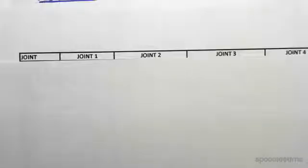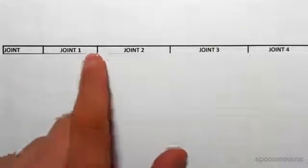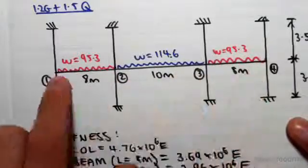The first thing we want to do is have a column for joints. We have a column joint, and we have joint one, joint two, joint three, joint four. So that corresponds to one, two, three, four, the four joints. That's line number one.